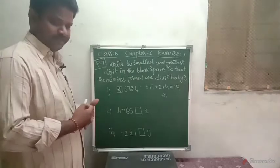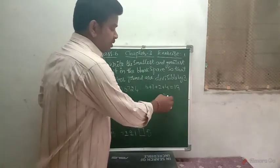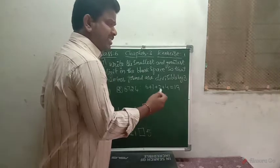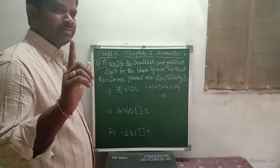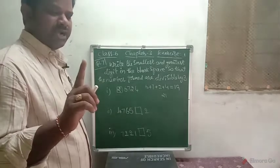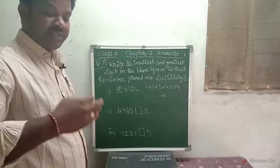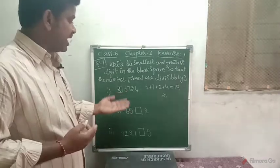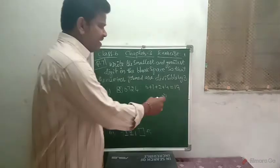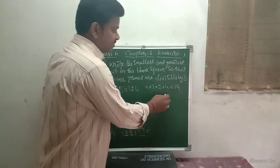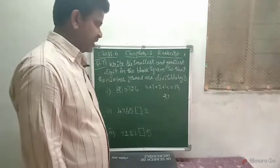And what is the greatest digit? What is the greatest multiple of 3 with one digit? That means 3 times 9 equals 27. If 3 times 10 is 30, we should not write 10 in the blank. We need to write only one digit. So, 27 is the greatest one-digit multiple of 3.